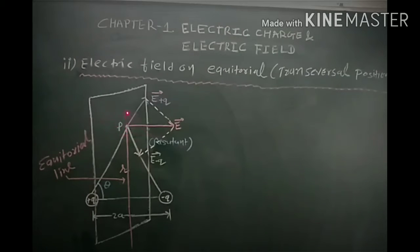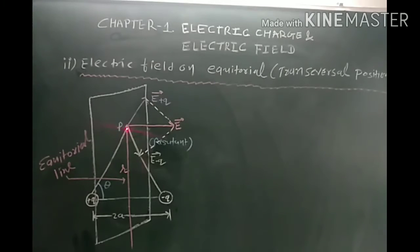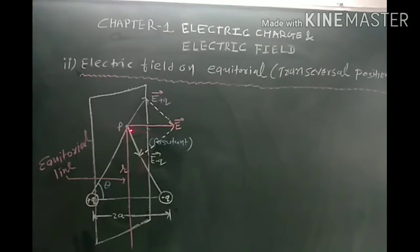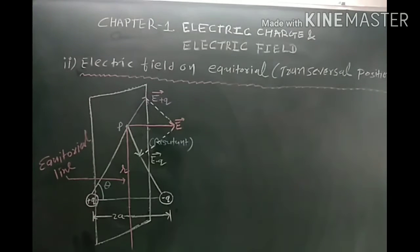We want to find out the electric field on this equatorial line at any arbitrary point, say P. The electric field due to the charge plus q at point P is given by E(+q), because it is a repulsive force directed outward. From the minus q charge, the electric field produced at point P is E(−q).